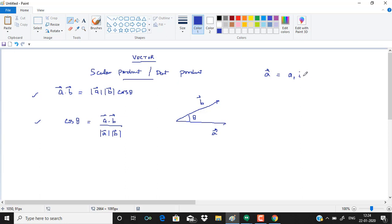So let us say that a vector is a1 i plus a2 j plus a3 k, and b vector is b1 i plus b2 j plus b3 k. Then a dot b can be written as a1 b1 plus a2 b2 plus a3 b3.